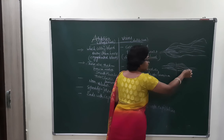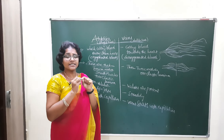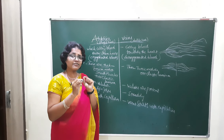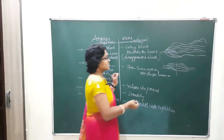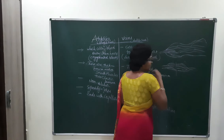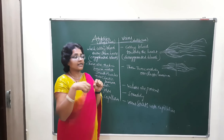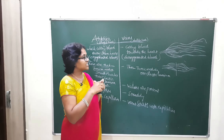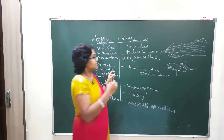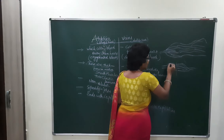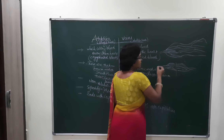The arteries end with capillaries and the veins start with capillaries. Capillaries are very thin-walled. Because of that, exchange of nutrients and gases takes place very easily to the tissues. At the tissue level, gaseous exchange is very easy.